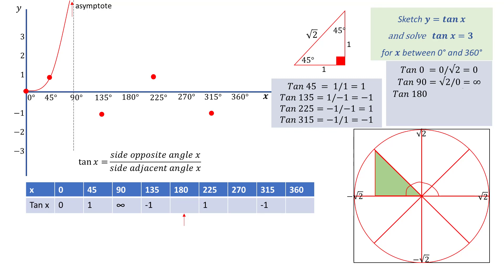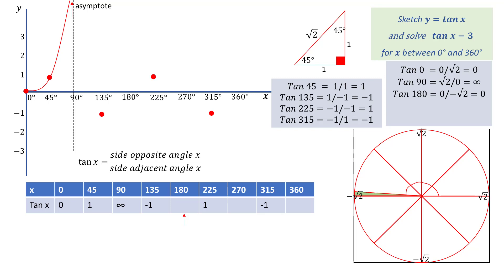Now we find tan of 180 degrees, starting with a right angled triangle in the second quadrant and decreasing the angle at the centre so that 180 degrees is reached. As we get closer to 180, the side opposite approaches 0 and the side adjacent approaches negative root 2, giving tan of 180 equal to 0 divided by negative root 2, which is 0, and this is plotted on the graph.